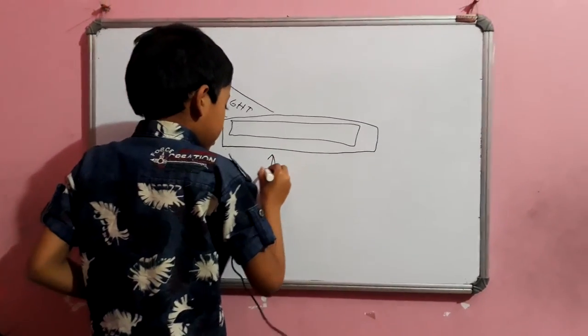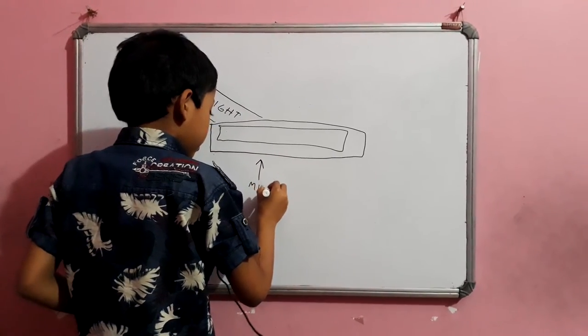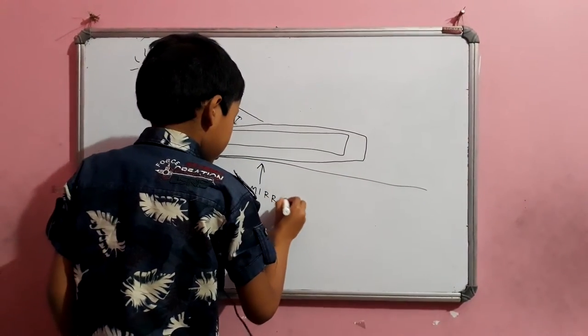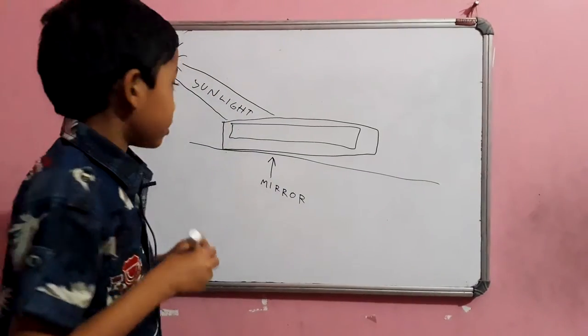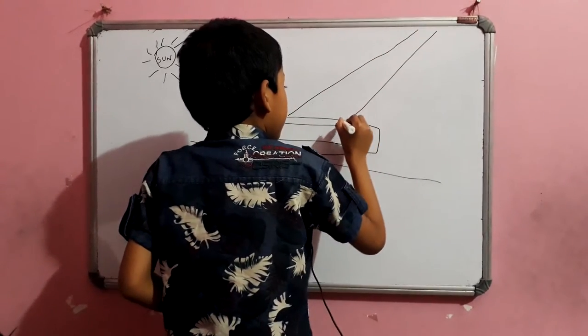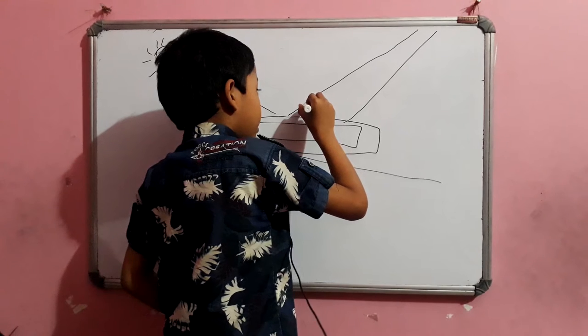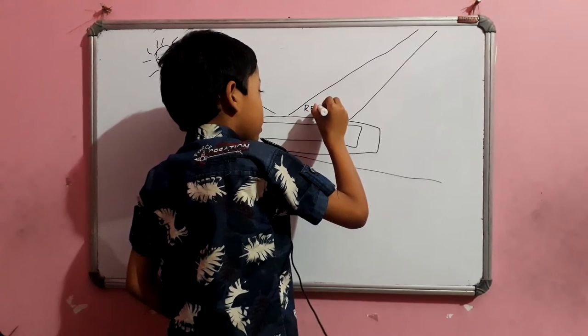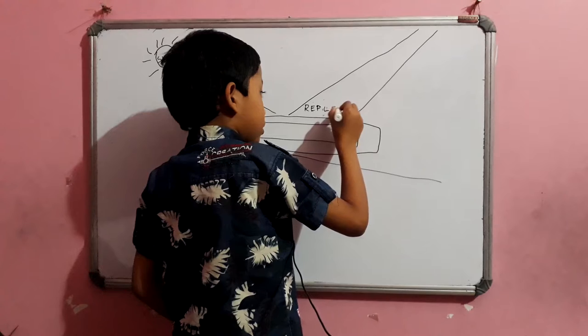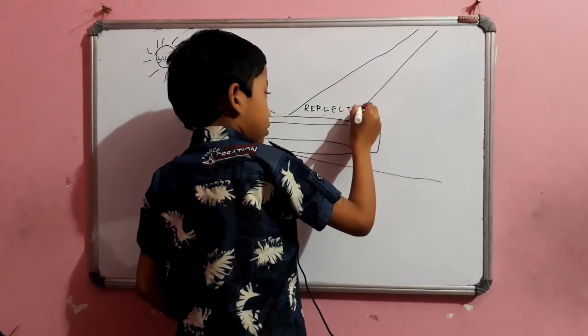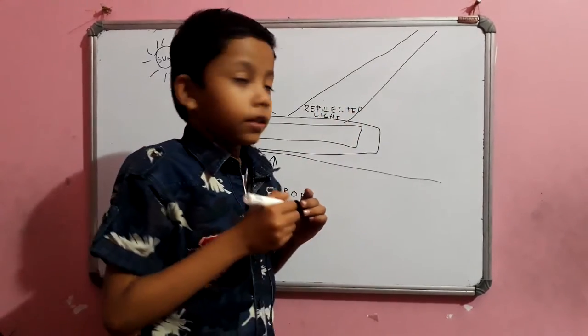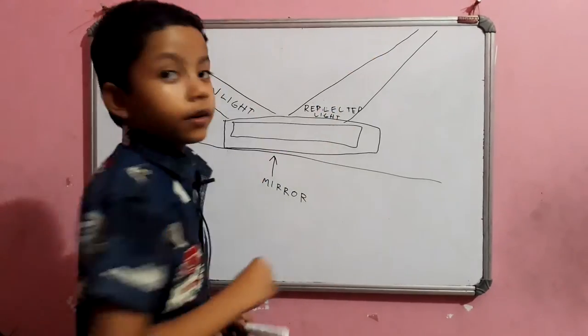And this is the mirror. Now the mirror is lying on the floor. Let me draw the floor. Mirror. Now the reflected light. Just a minute. Reflected light is reflected on the other side.